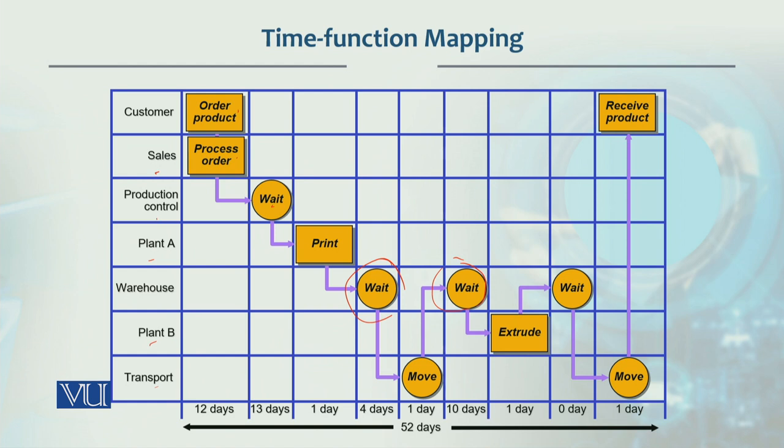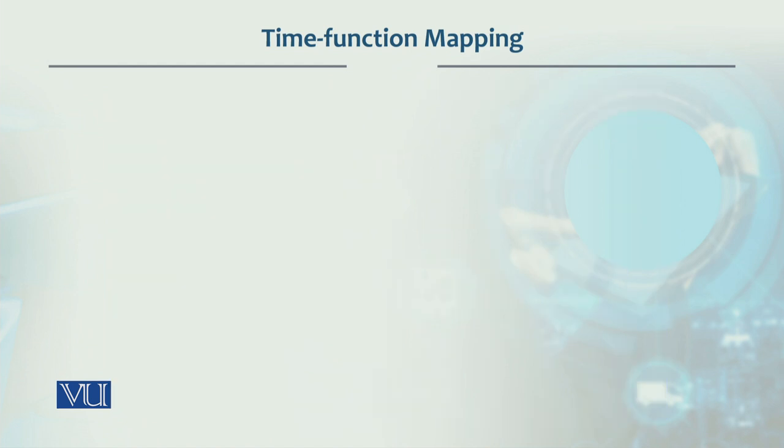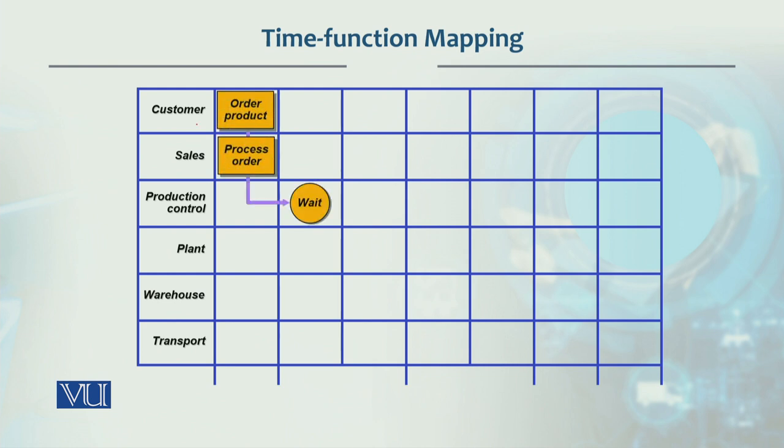To us ko agar hum phir se karein to is ke andar hum ne, let's go back and see, is ke andar jo yeh production control aur is qisam ki cheezein in ko hum ne eliminate kiya. Customer sales, production, plant, warehouse, transportation. To is ke andar hum ne plant A, plant B yeh sara kuch eliminate kiya kyun ke value add nahin kar raha. Ek hi jagah yeh perform ho sakta hai.